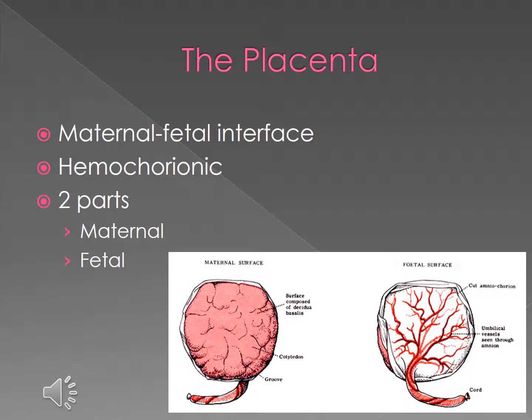The placenta is hemochorionic. The blood of the mother enters the intravillus space and flows slowly around the villi, allowing an exchange of metabolic and gaseous products with fetal blood.